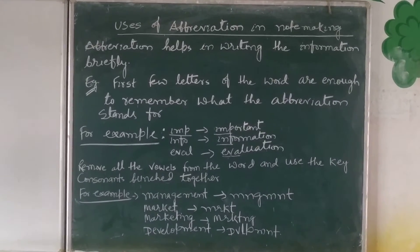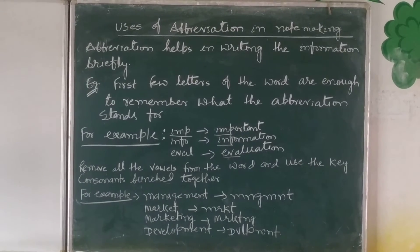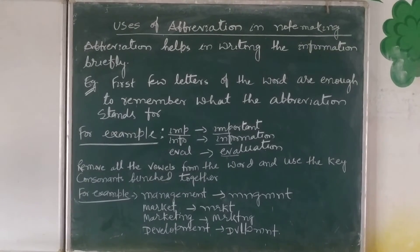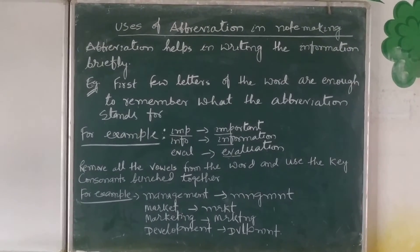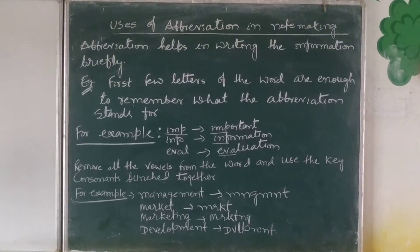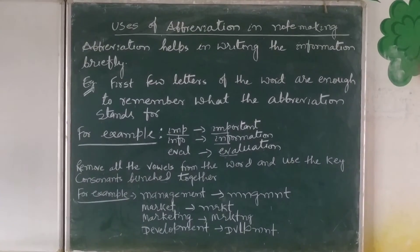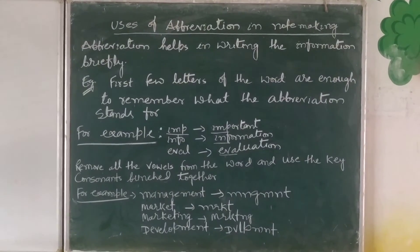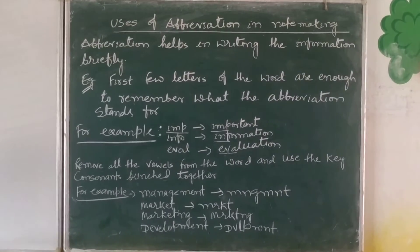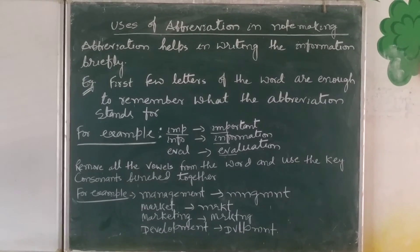Another rule says that if you want to write some abbreviation, you need to remove all the vowels from the word and use the key consonants together. So if you want to write 'management,' the vowels A and E will be removed, so this will be MNGMNT. Market becomes MRKT. Marketing becomes MRKTNG. And development becomes DVLPMNT.